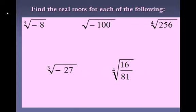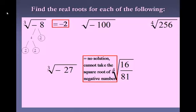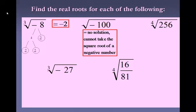Try to find the roots for each one of the following, pause the video until you're ready to go over these. Cube root of negative 8 — we're going to ignore the negative and break down 8. You're looking for groups of 3 of the same number, you have 3 twos, so 2 is your answer, but it's negative because it was the cube root of a negative — you can do that, it's just a negative answer. Square root of negative 100 is going to be no solution — you can't take the square root of a negative number. You can take the cube root or fifth root of a negative, but not the square root or fourth root. It's got to be an odd-numbered root to have a negative answer.